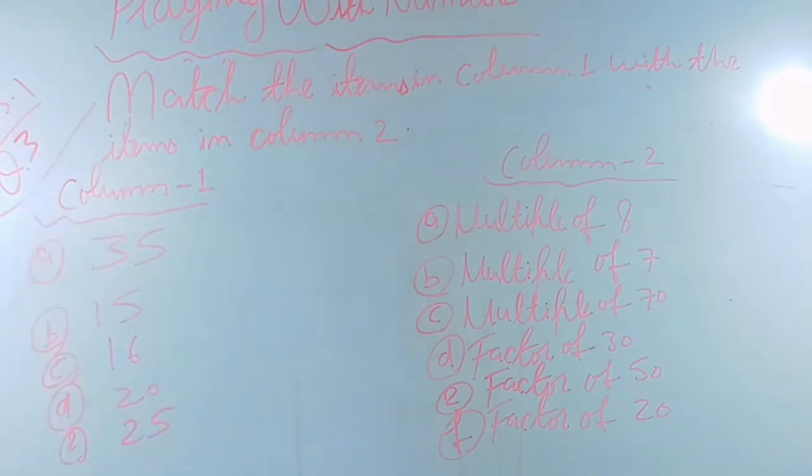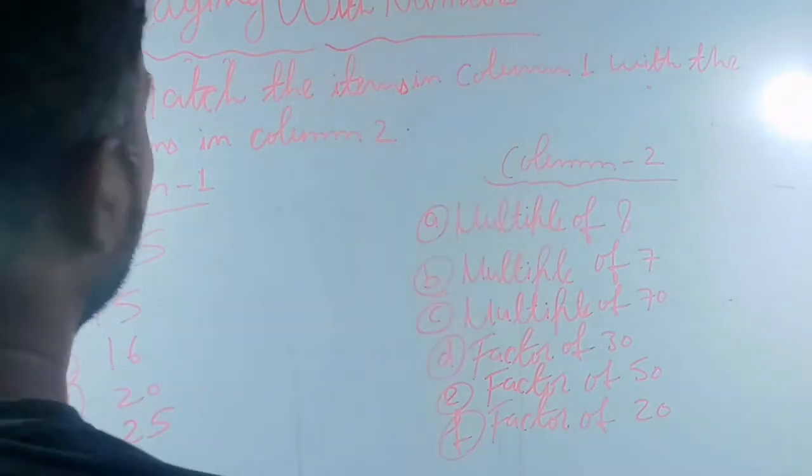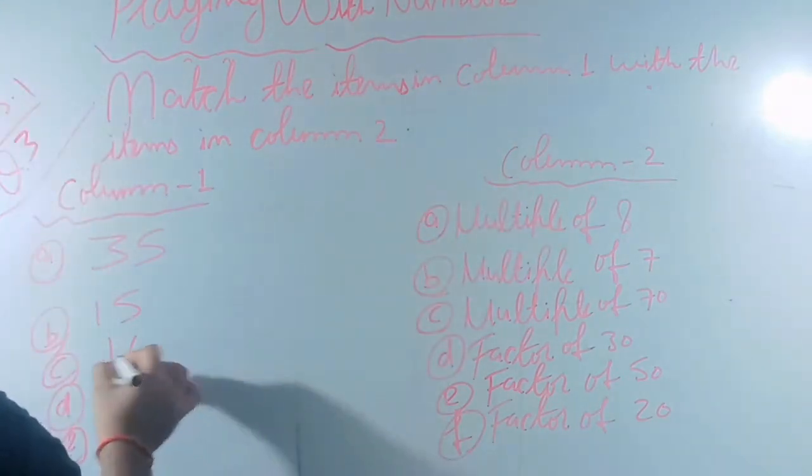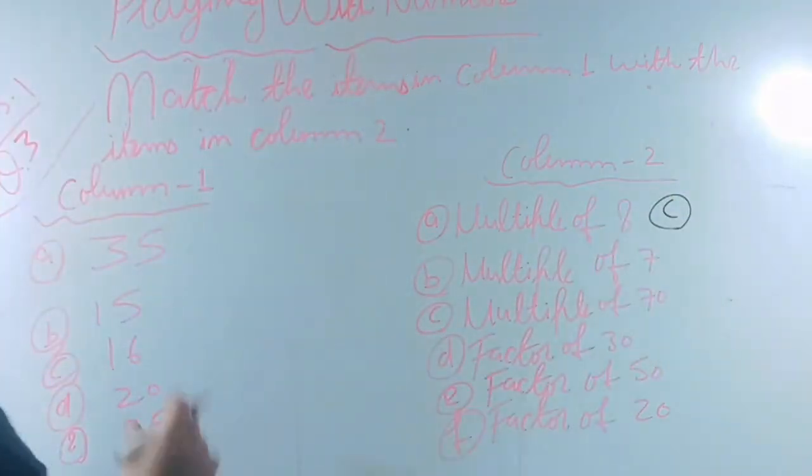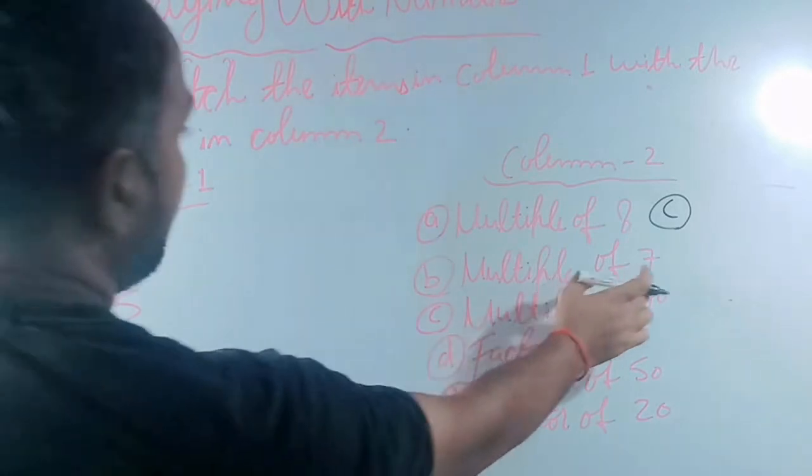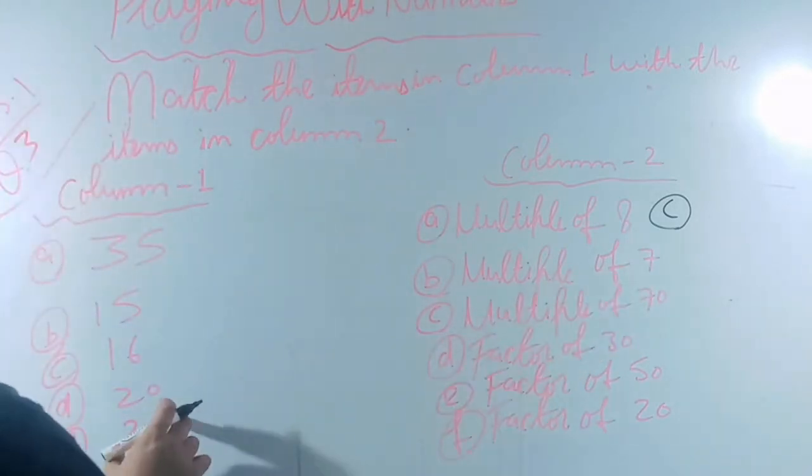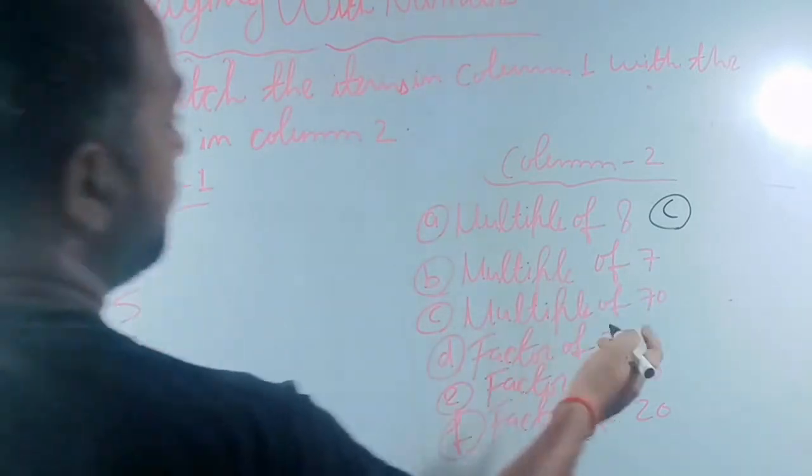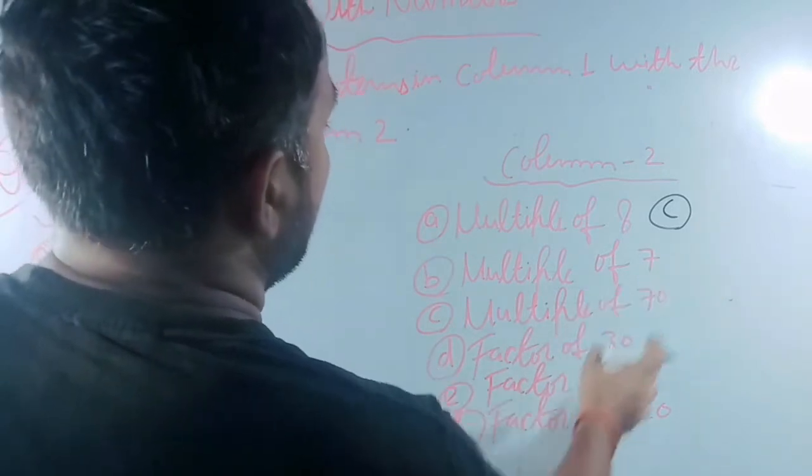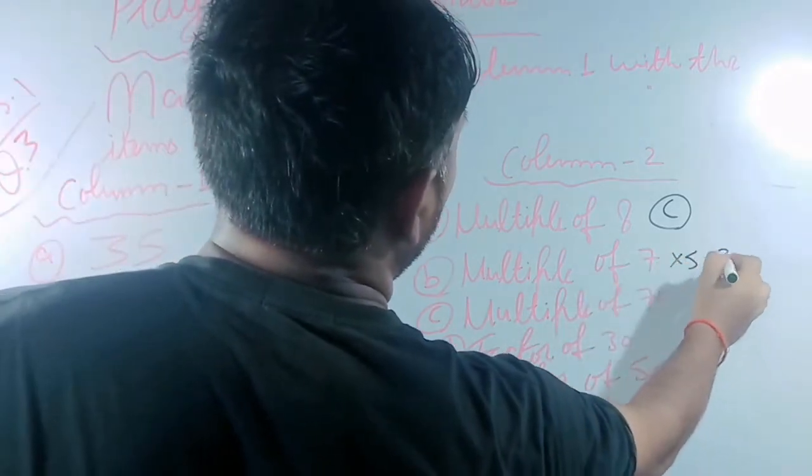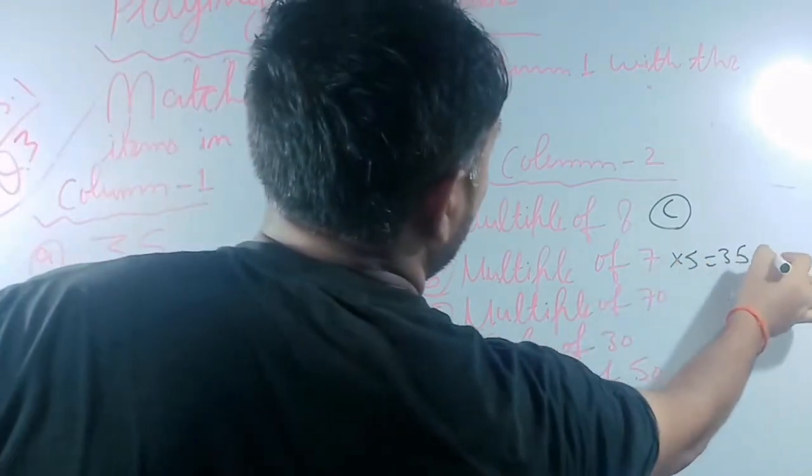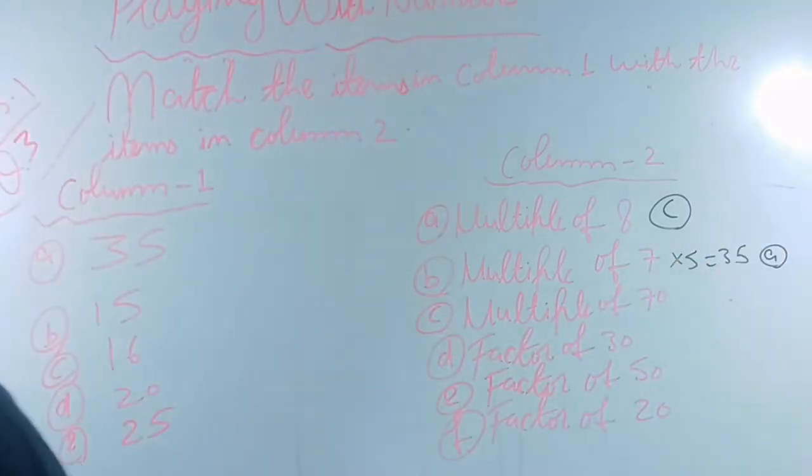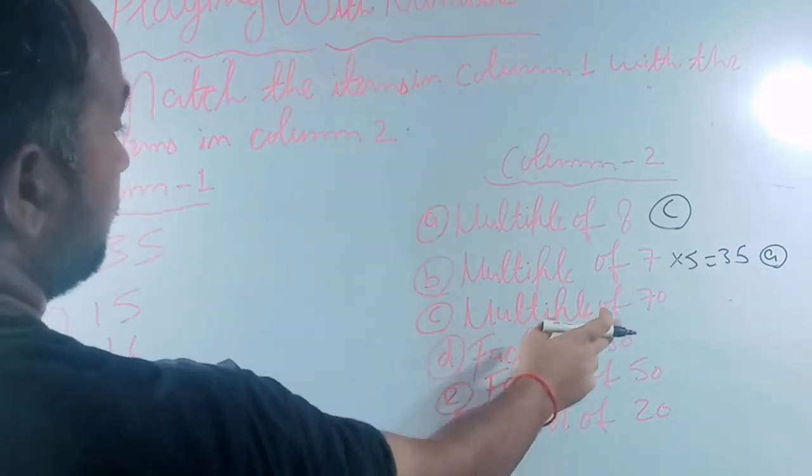We have to find according to this matching. First of all, multiple of 8 is 16, so this is answer C. Now multiple of 7: as we multiply 7 with 5 we will have 35, so it is the answer of A.